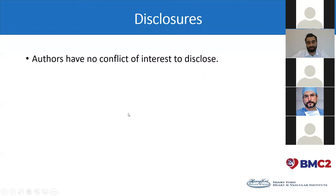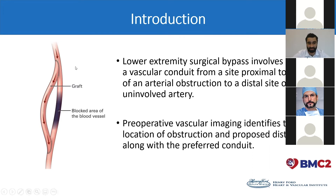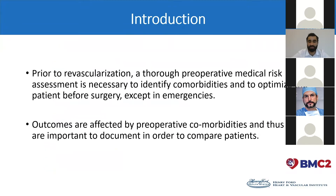We have no disclosures. Lower extremity bypass involves suturing a vascular conduit from a site proximal to the level of an arterial obstruction to a distal site of an uninvolved artery, as we can see in the illustration on the left. Pre-op vascular imaging identifies the location of obstruction and proposed distance targets along with the preferred conduit. It's very important to run a pre-op medical risk assessment to identify the comorbidities and try to optimize the patient whenever possible.